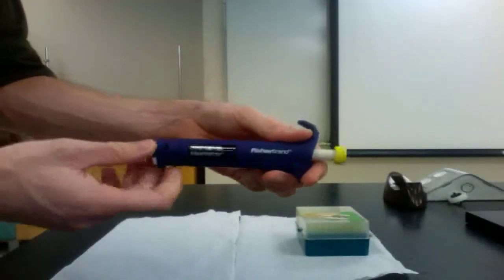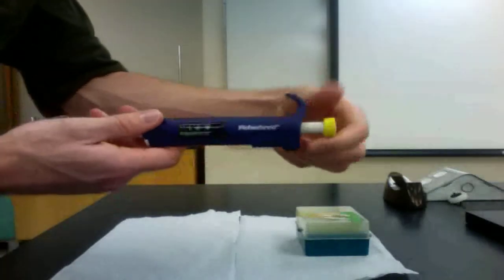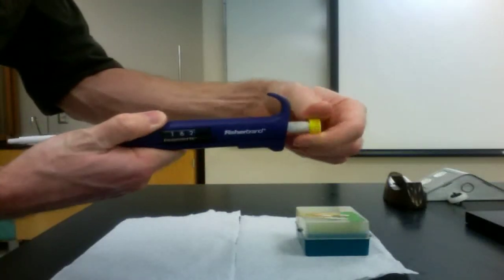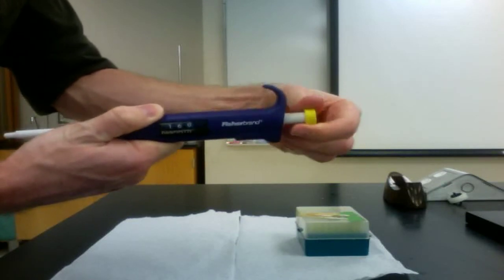The micropipette is used to deliver small volumes of liquid reproducibly. This is an adjustable micropipette in that you can change the volume delivered by simply turning the yellow knob. The numbers on the side indicate the number of microliters of solution delivered.